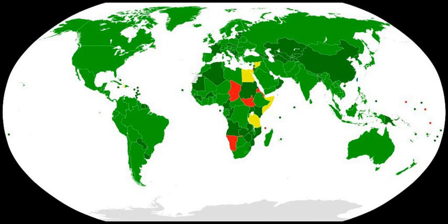The Geneva Protocol prohibits use but not possession or development of chemical and biological weapons. A draft of the BWC submitted by the British was opened for signature on 10 April 1972 and entered into force 26 March 1975 when 22 governments had deposited their instruments of ratification.